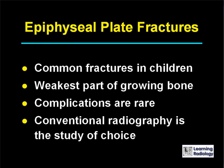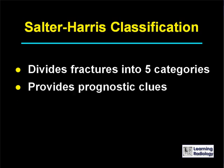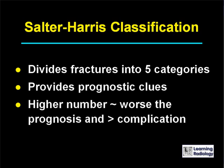Epiphyseal plate fractures are relatively common fractures in children. They occur through the weakest part of the growing bone, the epiphyseal plate. Most heal without any problems, complications are rare, and conventional radiography is the study of choice. The Salter-Harris classification divides these fractures into five different categories.